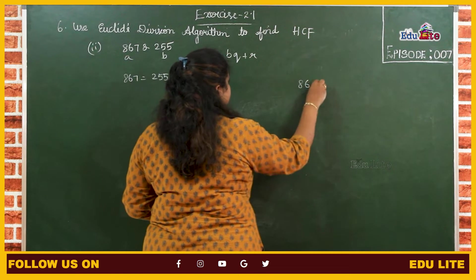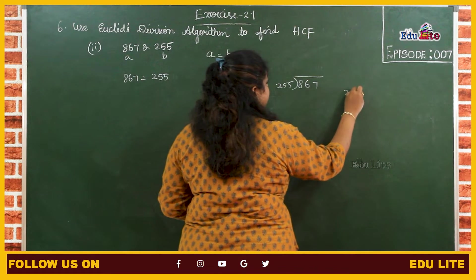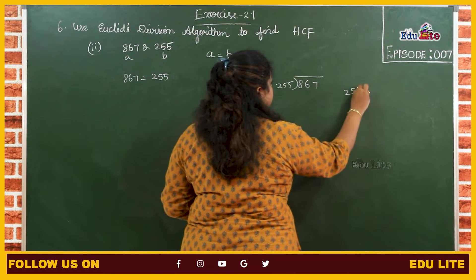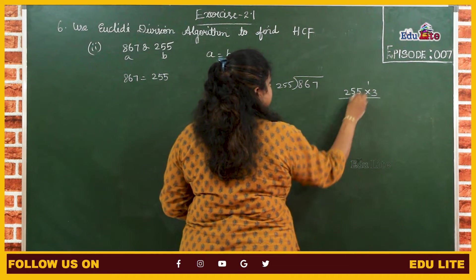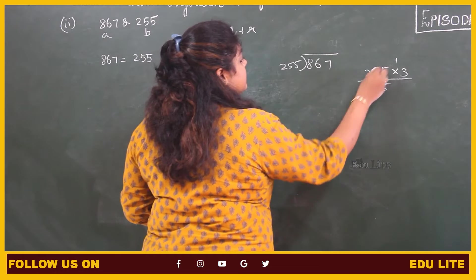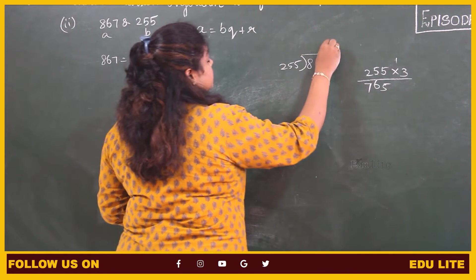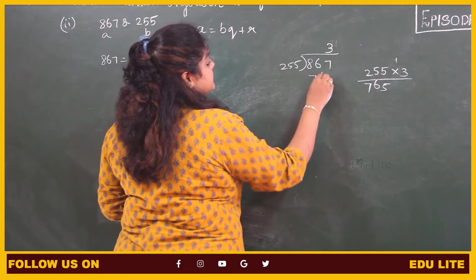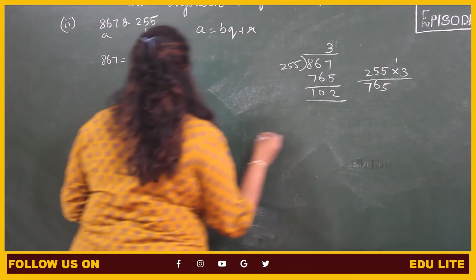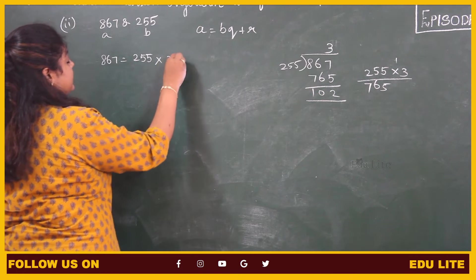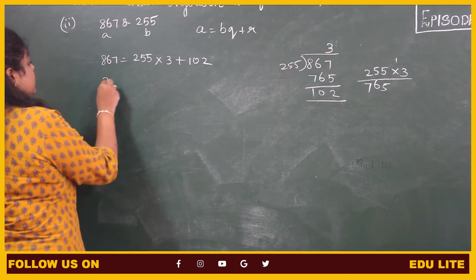So 867 dividing it by 255: 255 into 3 is 765, remainder 102. So 255 into 3 plus 102. The remainder is not equal to 0, therefore we have to proceed.